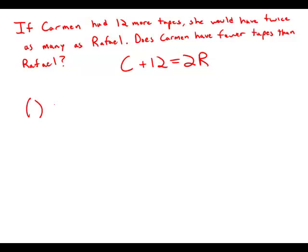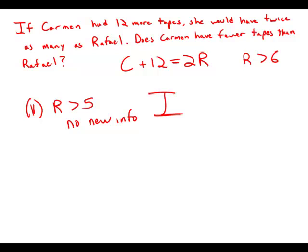Statement number one tells us that Raphael has more than five tapes. Here's the thing: we know that Carmen has a certain number of tapes, and when we add 12, that's going to be twice Raphael. So Raphael has to have more than six tapes — we can figure that out just from the prompt. Telling us Raphael has more than five tapes is a rare case where a statement adds no new information at all. It's just restating what we could have figured out from the prompt itself. This is beyond insufficient — it's completely useless.